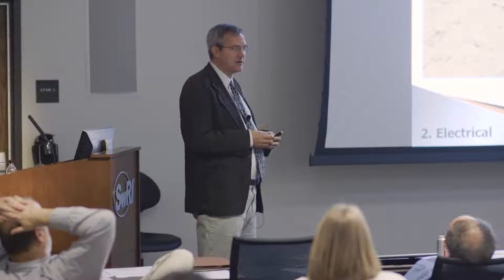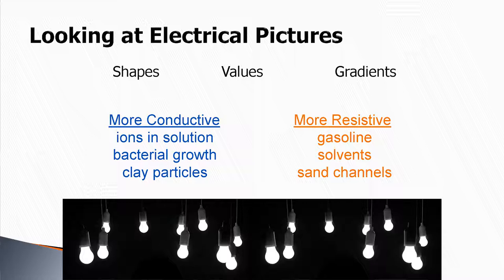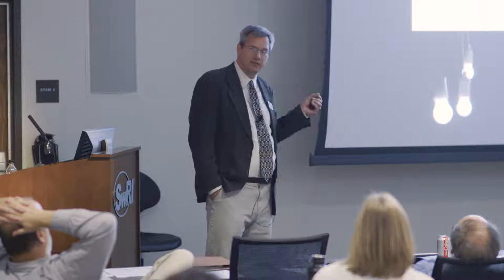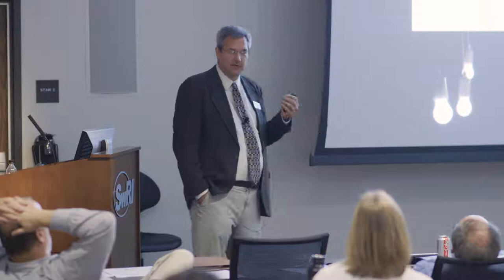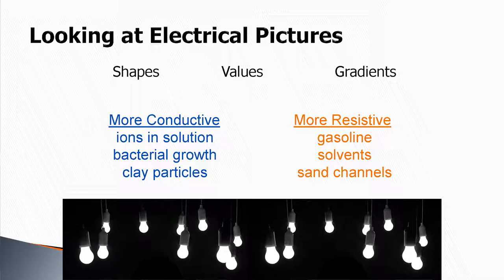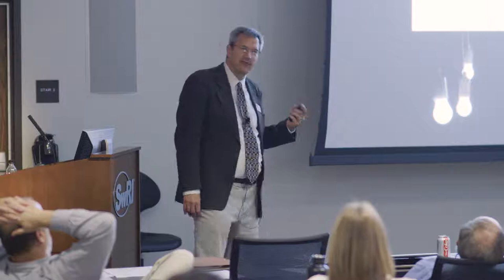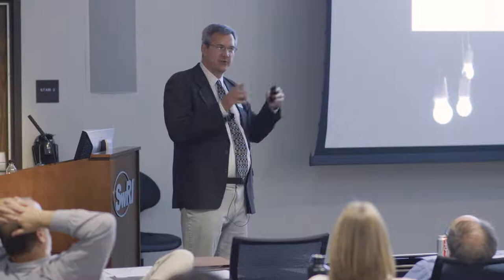Putting on electrical glasses: things that get brighter — light bulbs, salt in solution, clay particles, bacterial growth, microbes. Microbes make a living with electricity — they show up in images, with different kinds appearing differently because their bodies and reactions are different. They show up as conductors. The dark parts — places behind the light bulbs — are gasoline at about 10^10 ohm-meters for a refined product; solvents like PCE at about 10^13 ohm-meters. We dump resistive liquid in the ground and make dark parts. Most electrical pictures have trouble seeing dark parts — sand channels, hydraulically high-conductivity zones — because electricity prefers going around the silts and clays rather than through the clean sand.